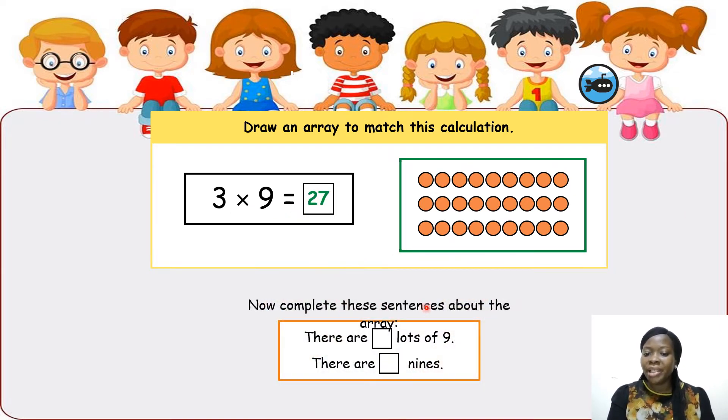Now complete these sentences about the array. There are how many lots of 9? 1, 2, 3. There are 3 lots of 9. And there are how many 9's? There are 3 nines because on each group we have 3 nines. Hope this is clear.